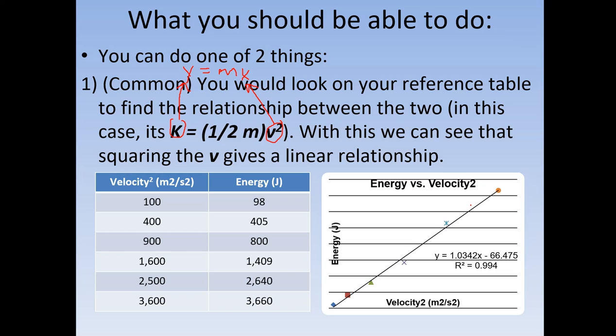Now, what's important about this is that from here, now that I can come up with the equation of our line, I can find the slope, which is extremely easy to do. And now, based off my equation, the slope gives me one-half m. So, from here, using the slope, I can get more information that I need, in this case, mass.